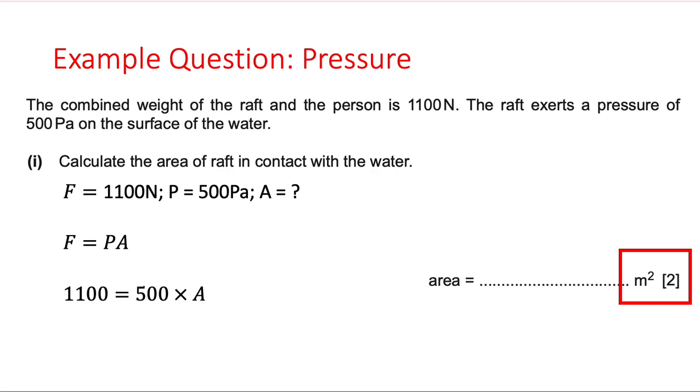At this stage, if you're feeling confident, you could rearrange the equation to A equal to F divided by P, but actually you don't need to. All we have to do now is put the values in. I know my F, I know my P, and so therefore I know that 1100 is equal to 500 multiplied by A. Therefore, if I want to get the answer, my A is going to be—I'm going to divide everything by 500. So I've got 1100 divided by 500, which is 2.2. There you go, there's my 2.2.